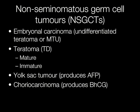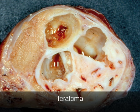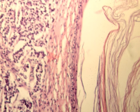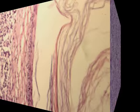This is the cut surface of a teratoma of the testis. It differs from seminoma in that it has a rather cystic appearance. This is a cyst lined by mature keratinising stratified squamous epithelium, and you can see the flakes of keratin on the right-hand side of the picture.